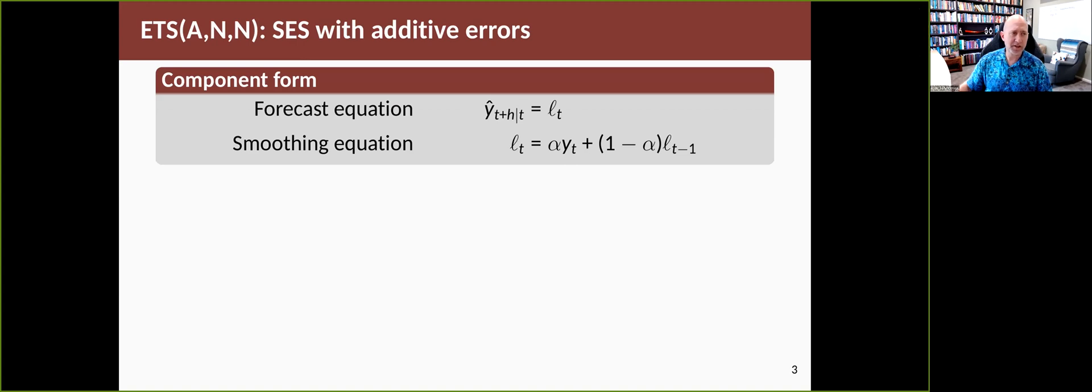So let's look at simple exponential smoothing to start with, the first method that was introduced in this chapter. The form we introduced in a few different forms of it, but the one that we're going to start with here is the component form, where you have an equation for the forecast and you have one smoothing equation which shows how the level changes over time as each new observation arises.